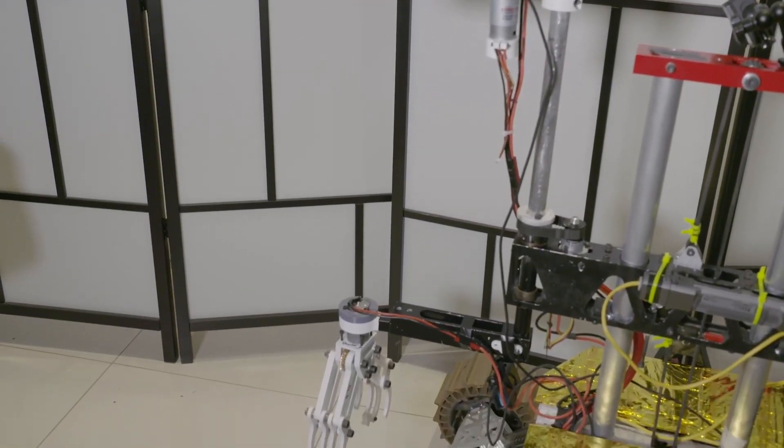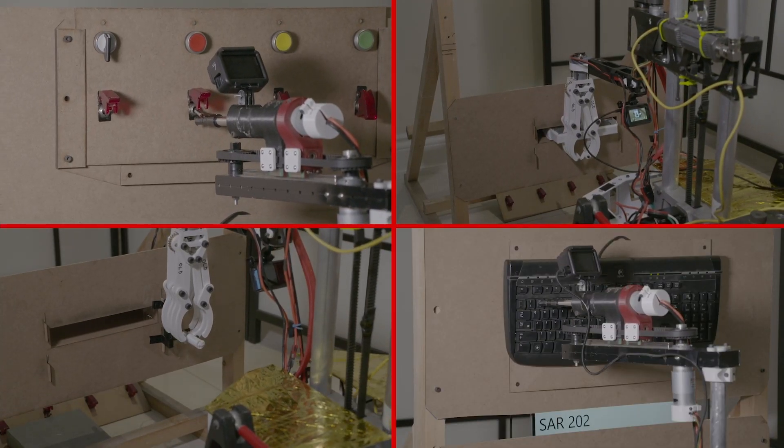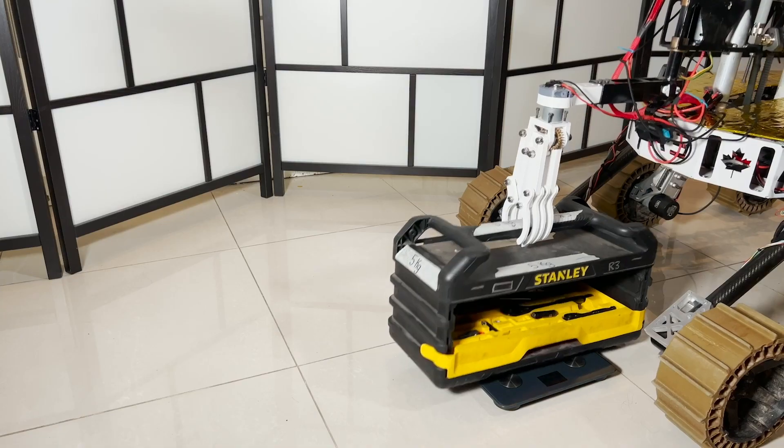There are two end effectors on the rover, a rotary tool on a linear rail and a two-clawed gripper. Each specializes in tasks such as interacting with buttons, switches, drawers, or payloads.